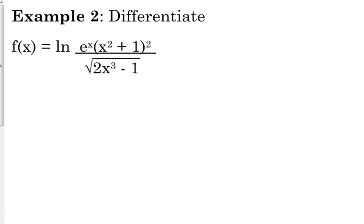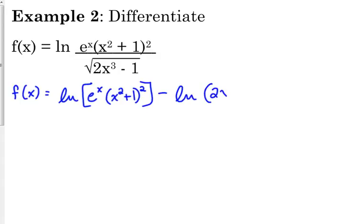Our properties of logarithms say when you're taking the natural log of a quotient, you can expand that into the difference of natural logs. So we've got the natural log of the top minus the natural log of the bottom. And I'm going to go ahead and write that square root as the one-half power because I know I'm headed there eventually. Now, within that first natural log, we have a product, e to the x times x squared plus 1 squared. So we can split that up even further. The natural log of a product is the sum of natural logs.